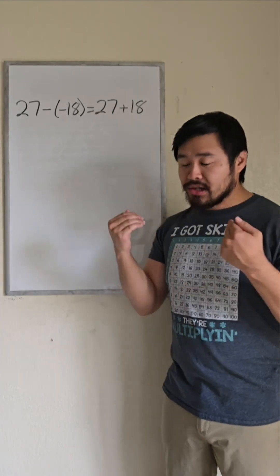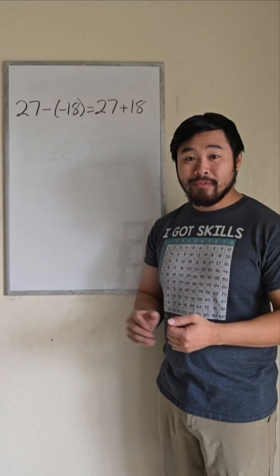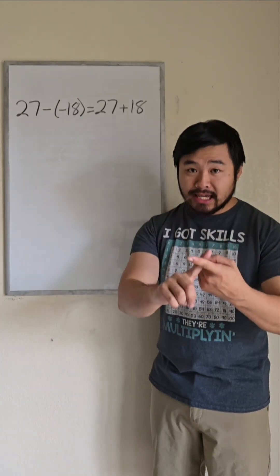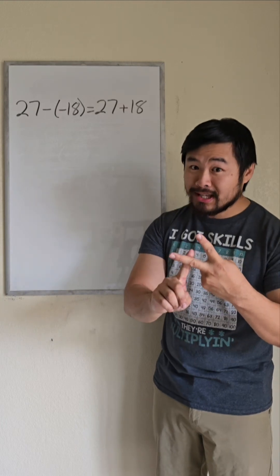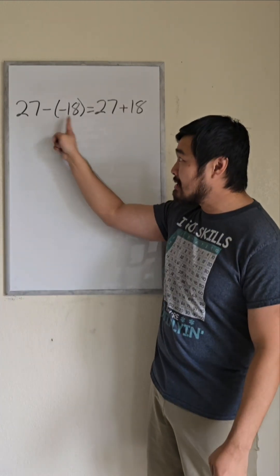Connect subtracting negatives to what they already know about subtraction. And we could think of subtraction as taking away, or how can I get from one number to the other? More specifically, how can I get from the subtrahend to the minuend?